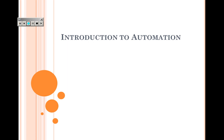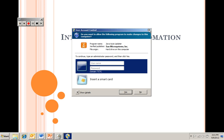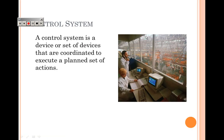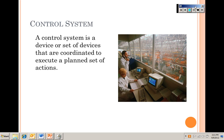Today we're going to do a little introduction to automation. First, let's look at what a control system is — it's a device or a set of devices that are coordinated to execute a planned set of actions. Control systems in general are not adaptive; they only take the steps you tell them to, so you have to be very clear and precise about what you want them to do.